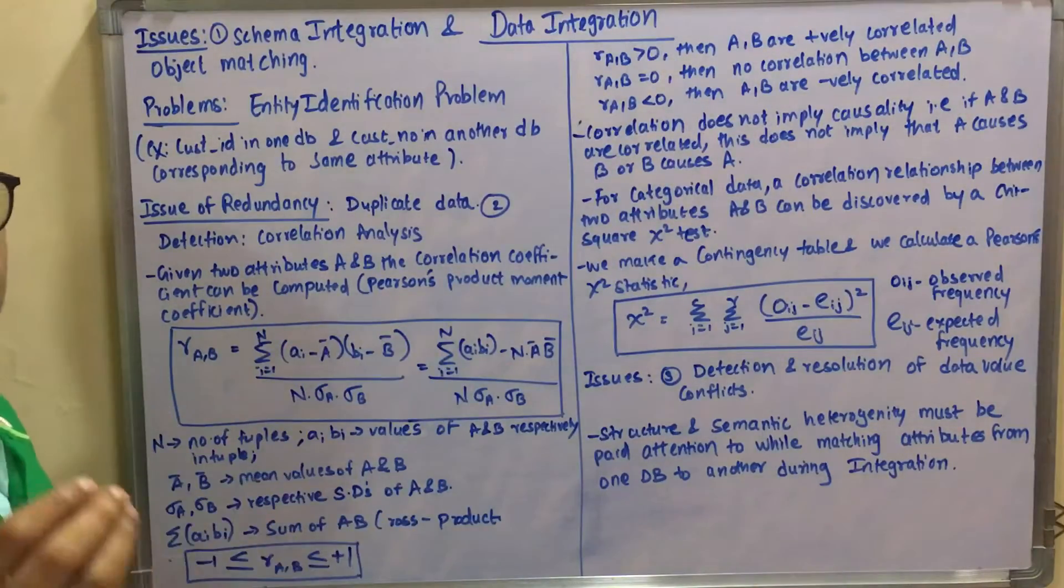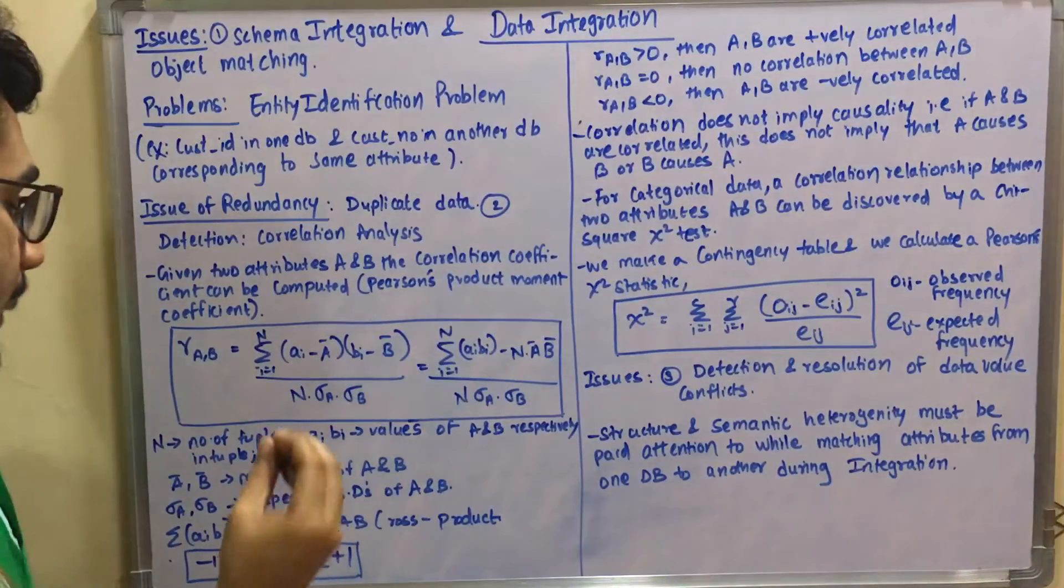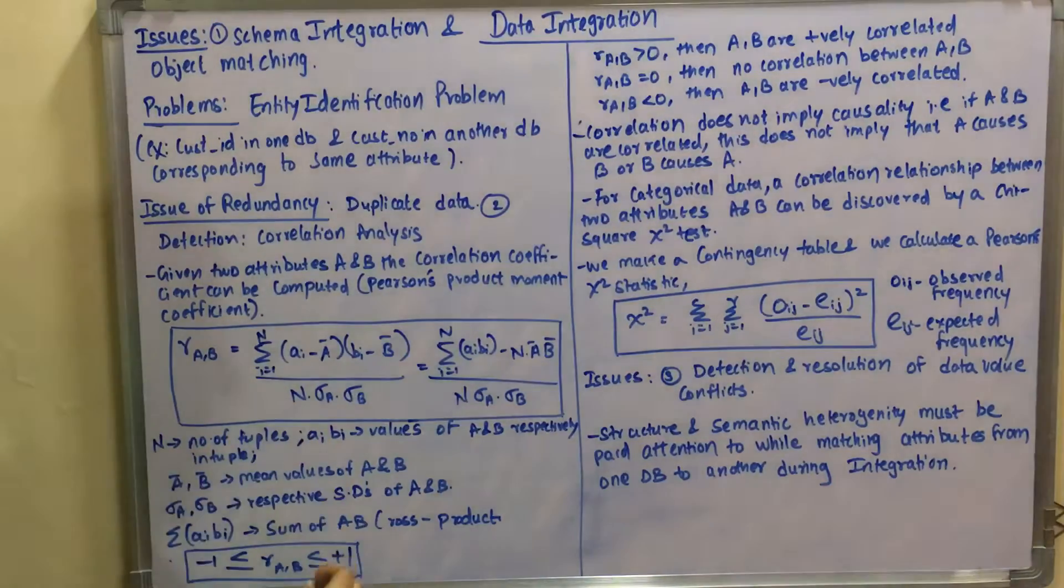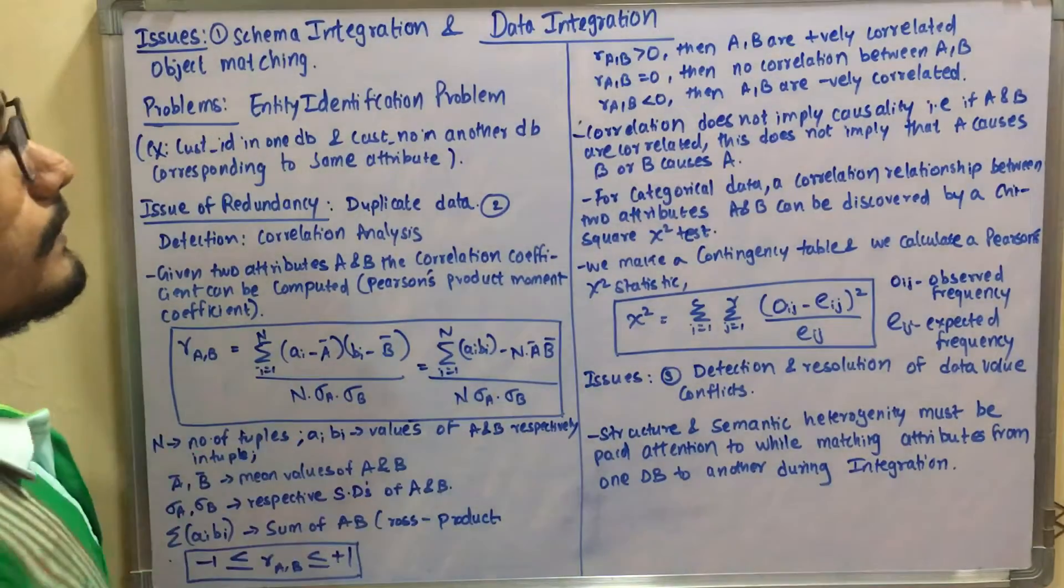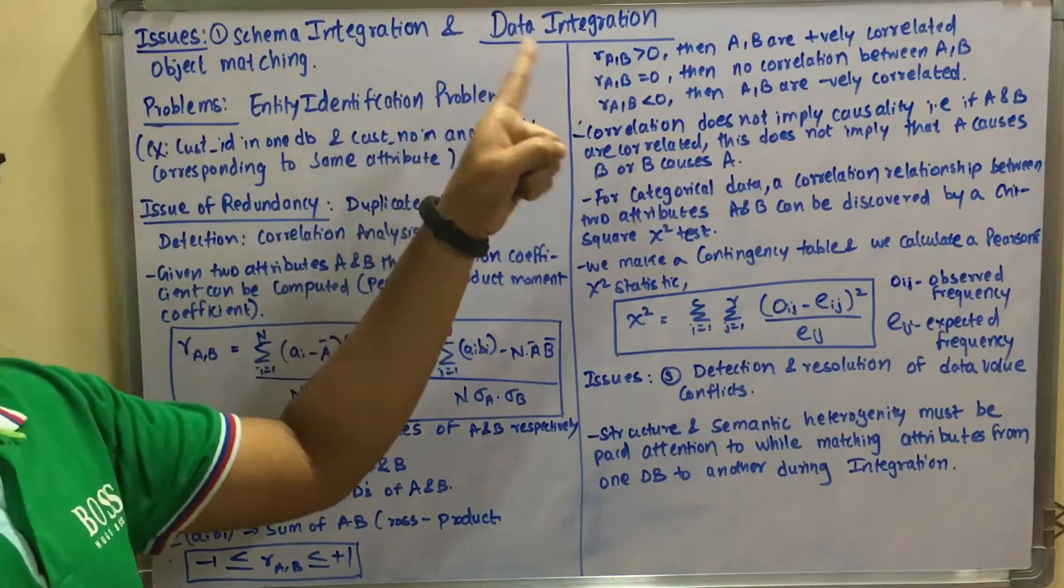The value of r_AB (Pearson's product moment coefficient) lies between -1 to +1, so -1 ≤ r_AB ≤ +1. You have three different sets of values for this.